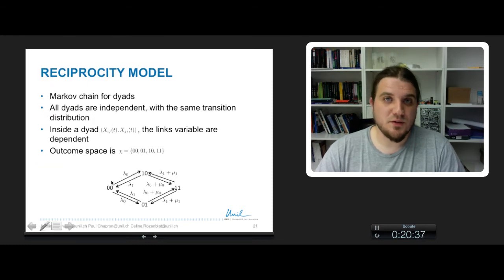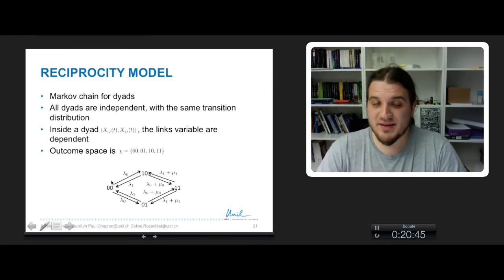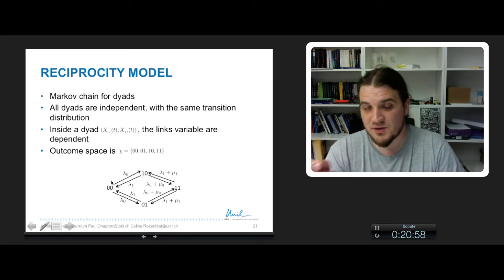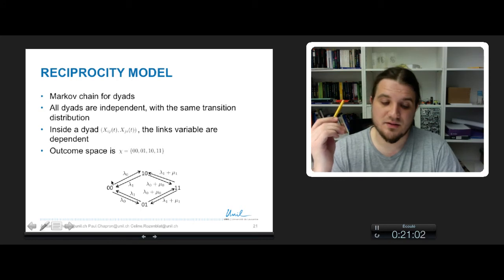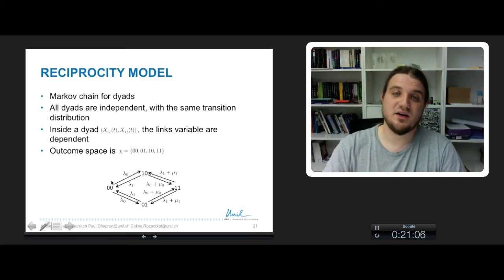A little bit more complicated model, but still very simple, is the Markov chain for dyads. Every dyad, a couple of nodes, are supposed independent, with the same transition distribution, but inside a dyad, for a couple of nodes i and j, the arc between i and j and the arc between j and i are dependent.